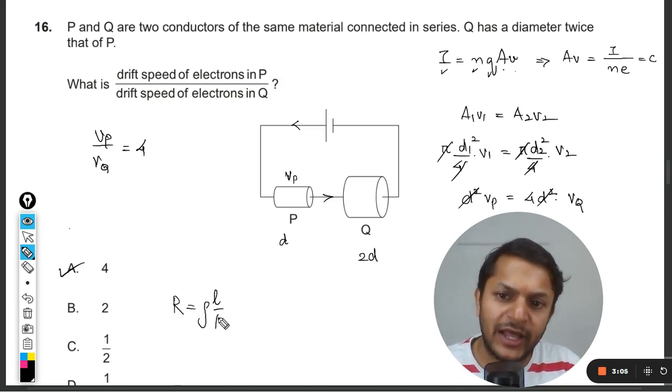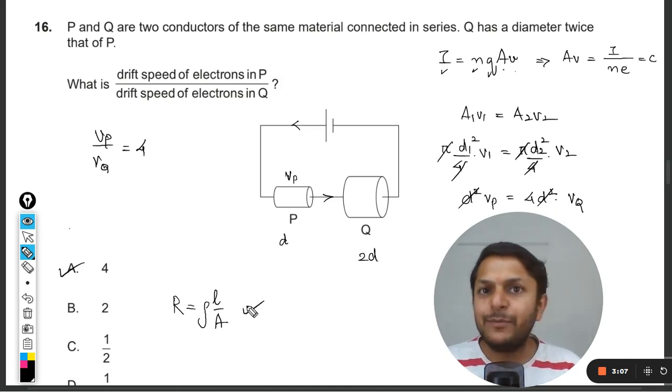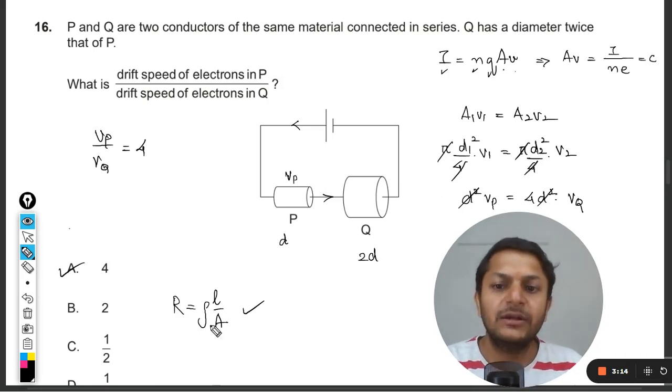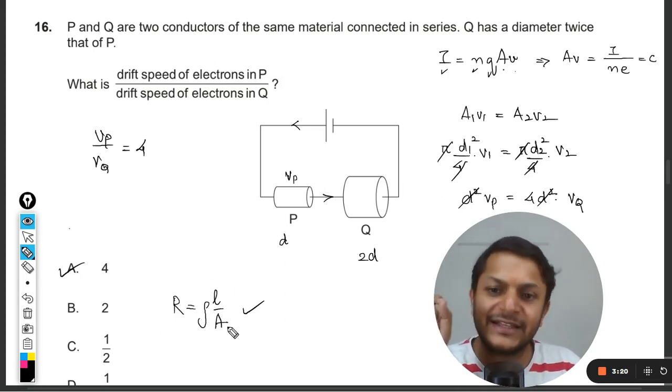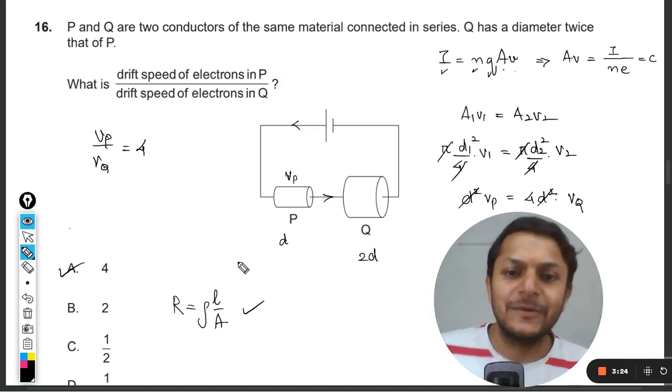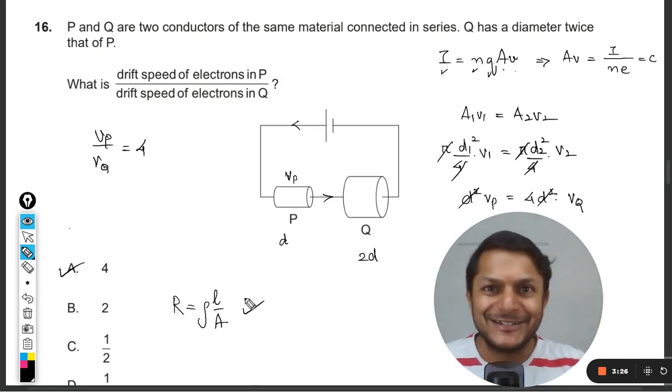Like there is another formula which is R equals resistivity into l by A. There is a high possibility that if in May 2023 they have not asked this question, so they could be asking a similar question but based on this formula. So keep this formula intact with you. I hope you would be getting this question in November 2023, but nobody knows anything, okay then. So all the best, bye.